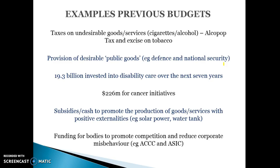Examples from previous budgets include alcopop taxes and excise taxes on tobacco, which are designed to reduce negative externalities and achieve a more efficient allocation of resources. There's also spending towards public goods, money spent towards disability care to help people with particular disabilities, and last year $226 million was spent to combat cancer initiatives — to help people find a cure for cancer and support those who already have the disease.